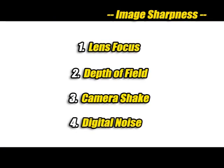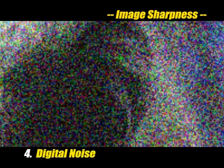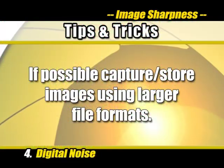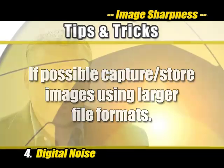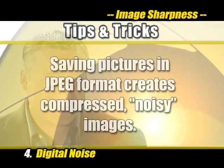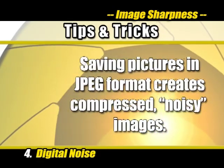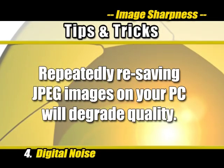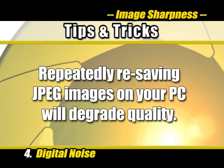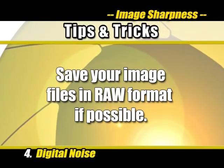Digital grain or noise makes the image appear poor or out of focus. Don't enlarge an image too much, and if you know that you must enlarge an image, select as large a file format as possible. Saving images in JPEG compression format creates some noise in the image, and repeatedly opening and resaving JPEG images can degrade the file quality. Save images in RAW format if possible, as this is not compressed like JPEG.